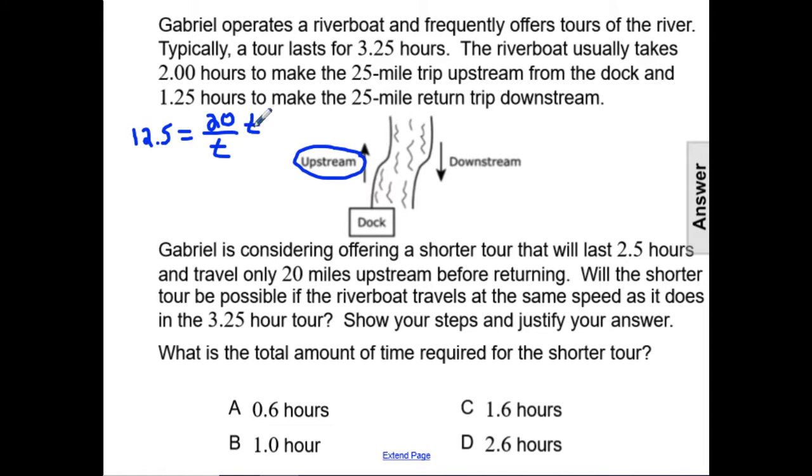To solve for T, we'll multiply both sides by T. So, 12.5T will equal 20, and we'll divide each side by 12.5 to get that the time it takes to travel upstream is going to be 1.6 hours.